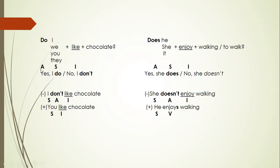Para la pregunta es así, para la oración en negativo es así. Recuerden que la I significa un verbo en infinitivo. Y cuando conjugamos con I, we, you, and they, tenemos el sujeto y nuestro verbo en infinitivo. Pero cuando conjugamos con he, she, or it, tenemos nuestro sujeto y al verbo sí le tenemos que agregar una S, ES, o IES.